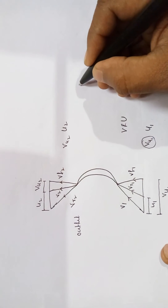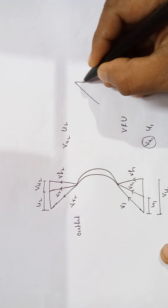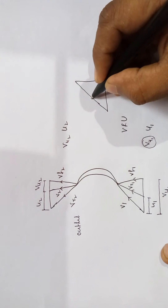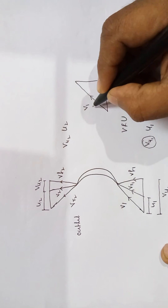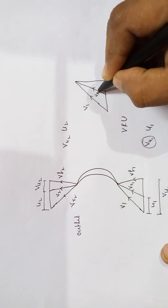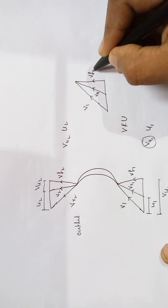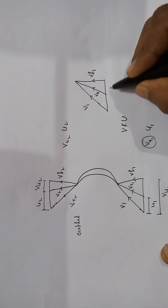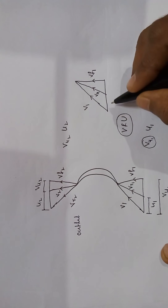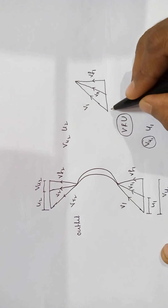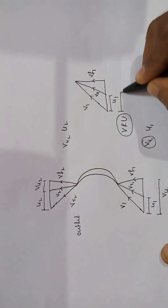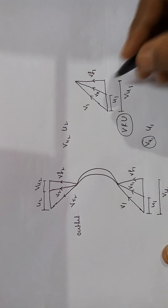Now I will write the inlet and outlet velocity triangles. Just remember the right angle triangle. The absolute velocity — the first velocity component — is always V1, coming from the nozzle or a fixed blade. The second velocity component is Vr1, and Vf1 is the axial component at the inlet. For the horizontal velocity components: from V1 to Vr1 gives U1, and from V1 to Vf1 gives Vu1. This is for the inlet.